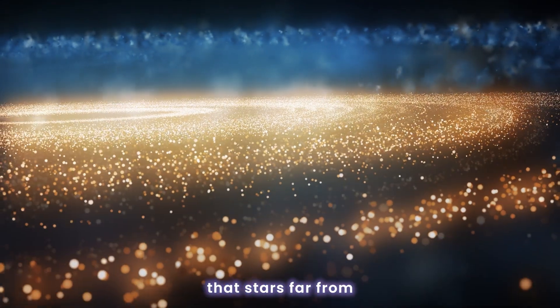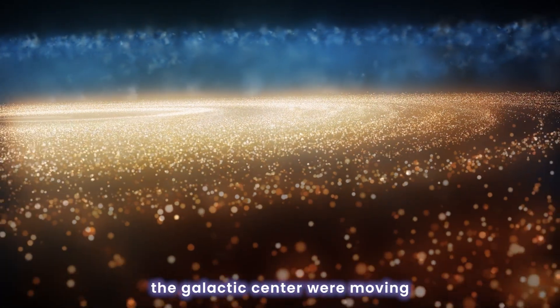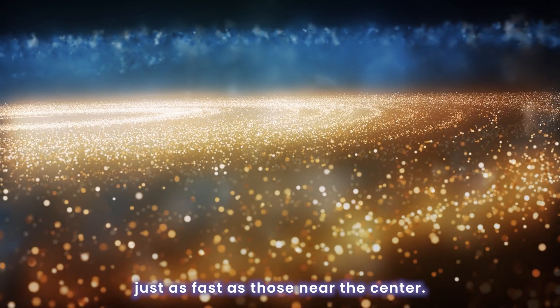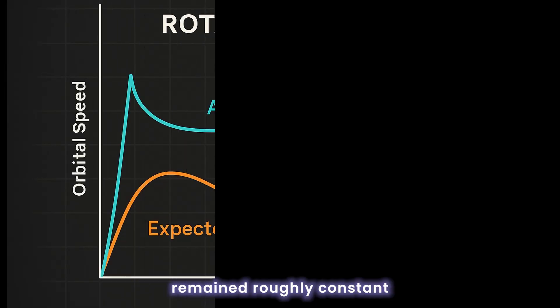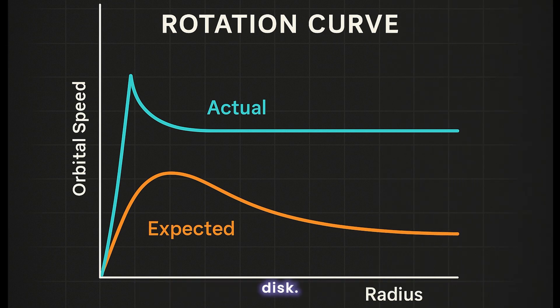Rubin discovered that stars far from the galactic center were moving just as fast as those near the center. Instead of decreasing with distance, their orbital speeds remained roughly constant all the way to the edge of the visible disk.